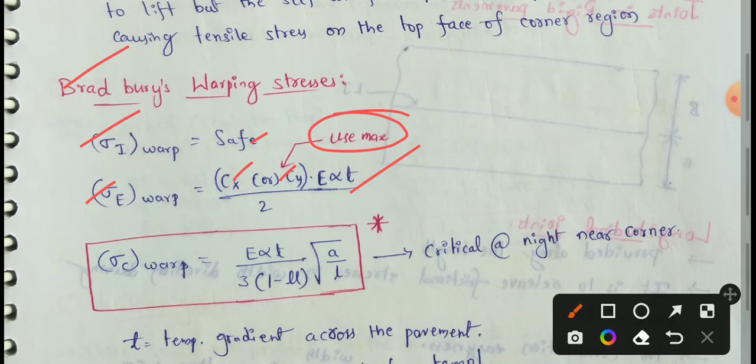Cy is the coefficient based on Lx divided by L in the right angle direction. Lx and Ly are the short and long dimensions of the slab. σ (alpha) is the coefficient of linear expansion per degree centigrade. T is the temperature difference during day time between top and bottom, in degree centigrade.